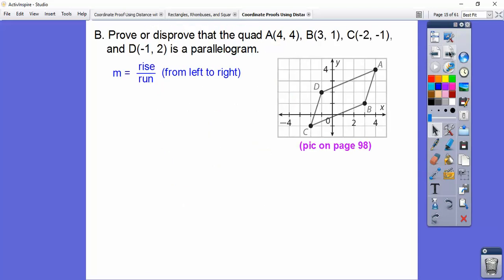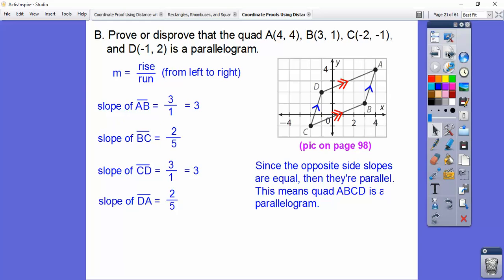So from, you always pick the left point to the right point. Let's do all of these. So the slope of AB - here's AB right here. We pick the left point and go to the right point. From the left point, it goes up 3 over 1, so the slope is 3 over 1. From BC, we pick the leftmost point, which is this guy. It goes up 2 over 1, 2, 3, 4, 5 - up 2 over 5. Same thing with CD - 3 over 1. And DA is up 2 over 5. So can you see that these slopes are equal and these slopes are equal? Since the opposite slopes are equal then they're parallel, this means it has to be a parallelogram.